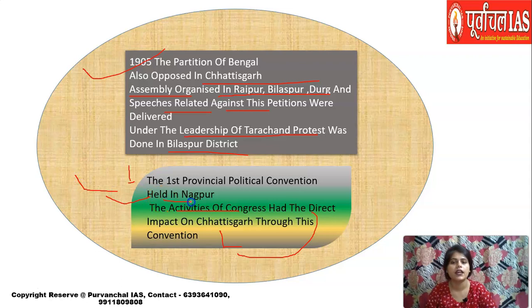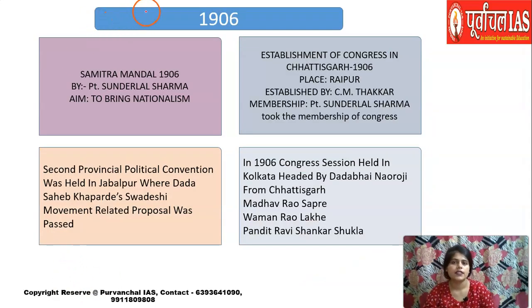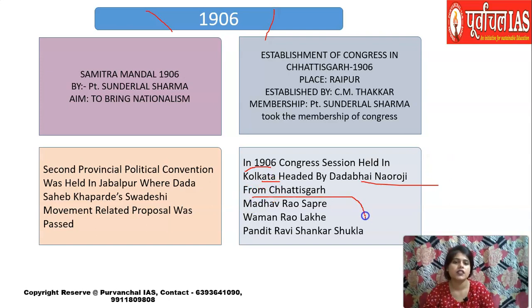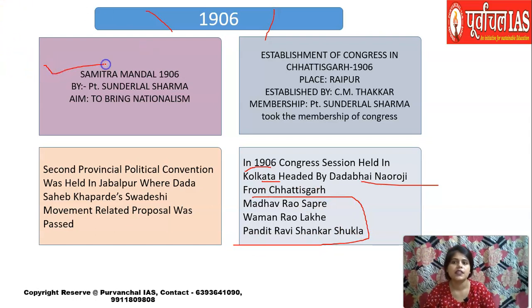In 1906, after the Partition of Bengal, the Swadeshi movement was running in India. The Congress session was held at Kolkata, headed by Dadabhai Naoroji, where the Swadeshi movement proposal was passed and Swaraj was made the goal of Congress. From Chhattisgarh, Madhav Rao Sapre, Vaman Rao Lakhe, and Pandit Ravi Shankar attended. In 1906, Samitra Mandal was established by Pandit Sundarlal Sharma to bring the sense of nationalism among the people of Chhattisgarh.